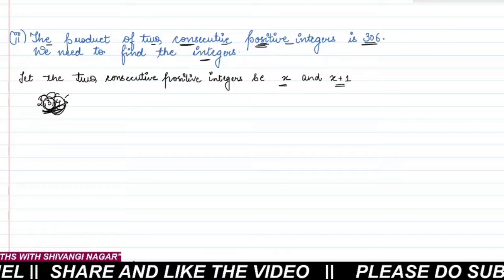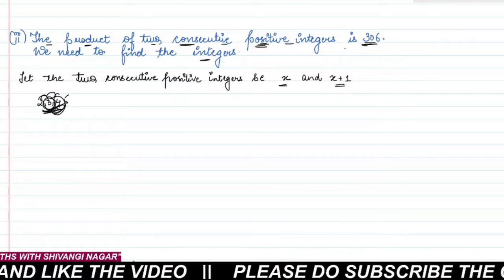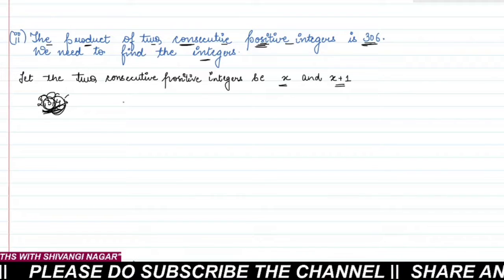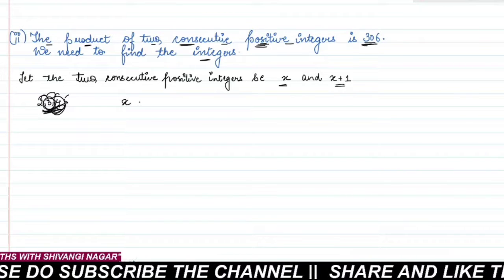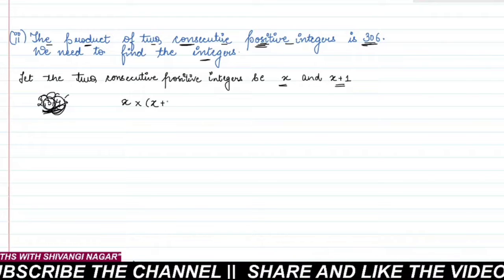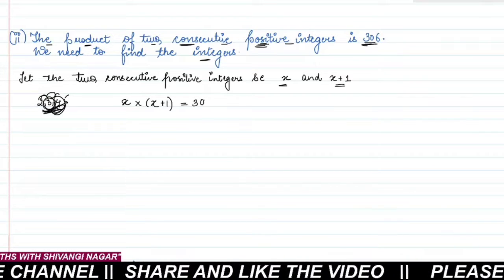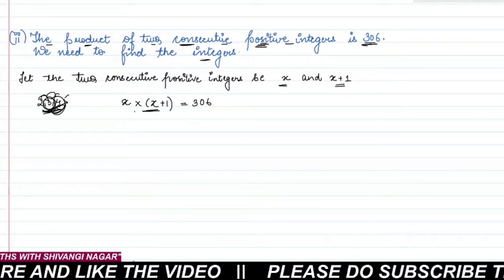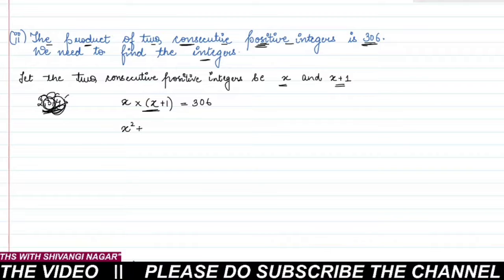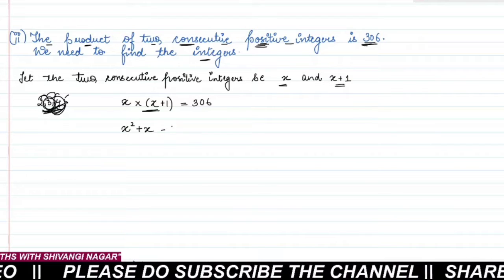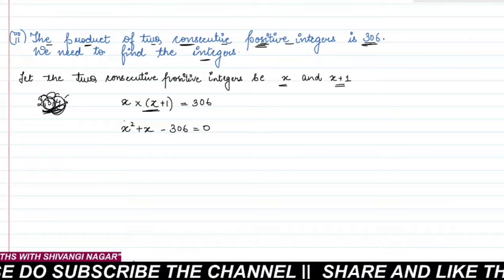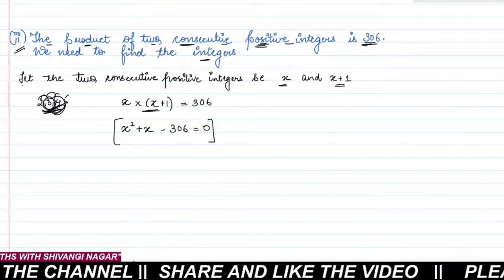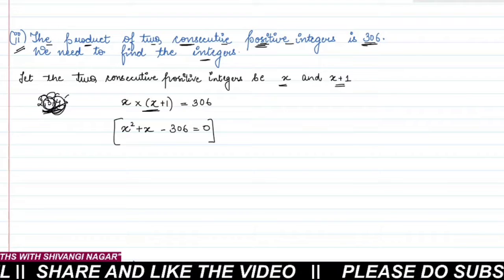We are given that the product of these two integers is 306. Writing this as an equation: x × (x+1) = 306. Opening the bracket and multiplying, we get x² + x = 306, and transposing gives x² + x - 306 = 0. This is the required quadratic equation for this sub-part.